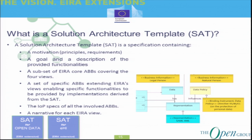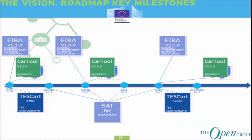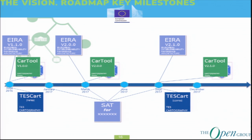We have also released four solution architecture templates, which you can download. Our roadmap so far: we released the cartography tool version 1.0, supporting EIDA version 1.1, based on ArchiMate 2.1. We plan to have a major release around March and a minor release around September each year. As we get more mature, the distance between releases will grow longer, as is typical in the industry.